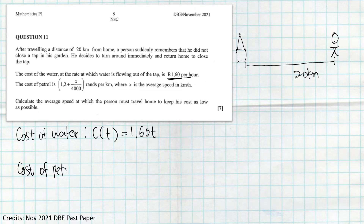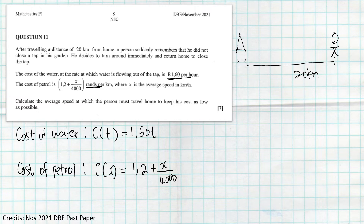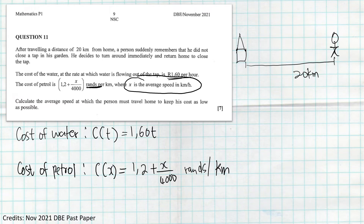The cost of petrol is given as 1.2 + x/4000 rands per kilometer, where x is the average speed in kilometers per hour. So we write the cost of petrol as C(x) = 1.2 + x/4000, expressed in terms of x because x represents the average speed.